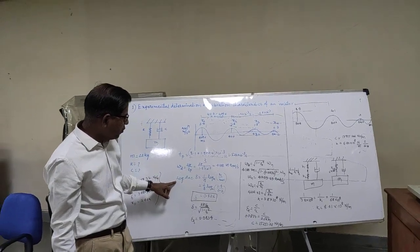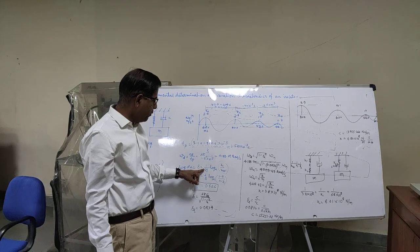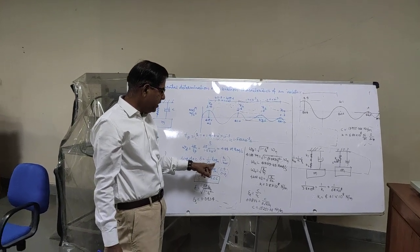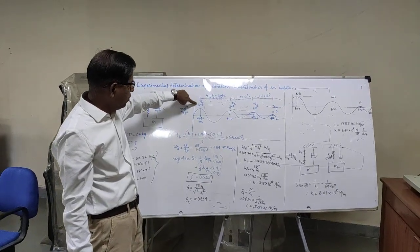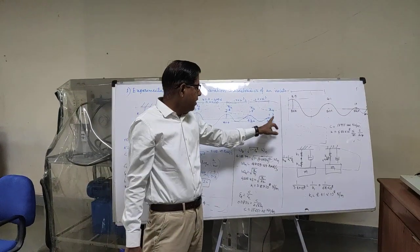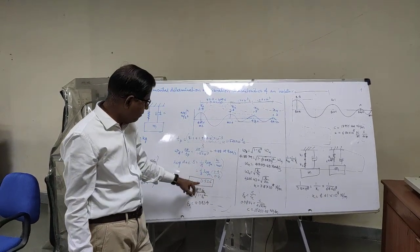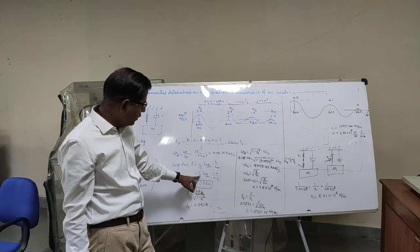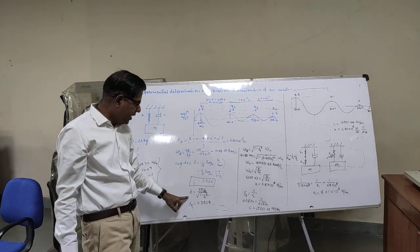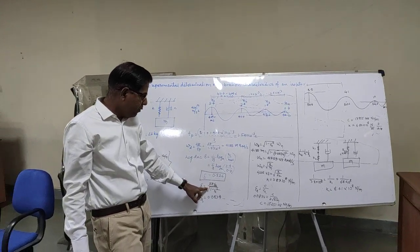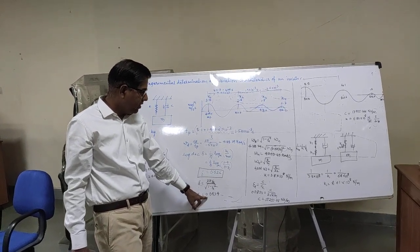Next is to calculate the logarithmic decrement. The logarithmic decrement is given by (1/n) × ln(x₁/x_{n+1}). Here x₁, the initial value, is 3.4, and after 3 cycles the x₄ value is 0.7. Putting the values for 3 cycles, we obtain the logarithmic decrement, and from that, using the formula 2πζ / √(1 − ζ²), we obtain the value of zeta as 0.0834.